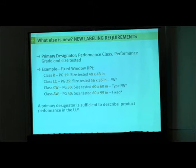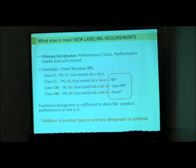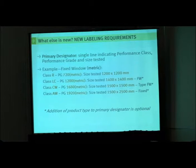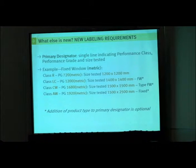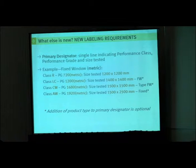You can also optionally append to that a description of the type of product it is — in this case, a fixed window. The other designator was designed for Canada, to report the additional properties that we've always been able to report in Canadian codes on windows. Our B and C ratings — you could say they are ABCs.